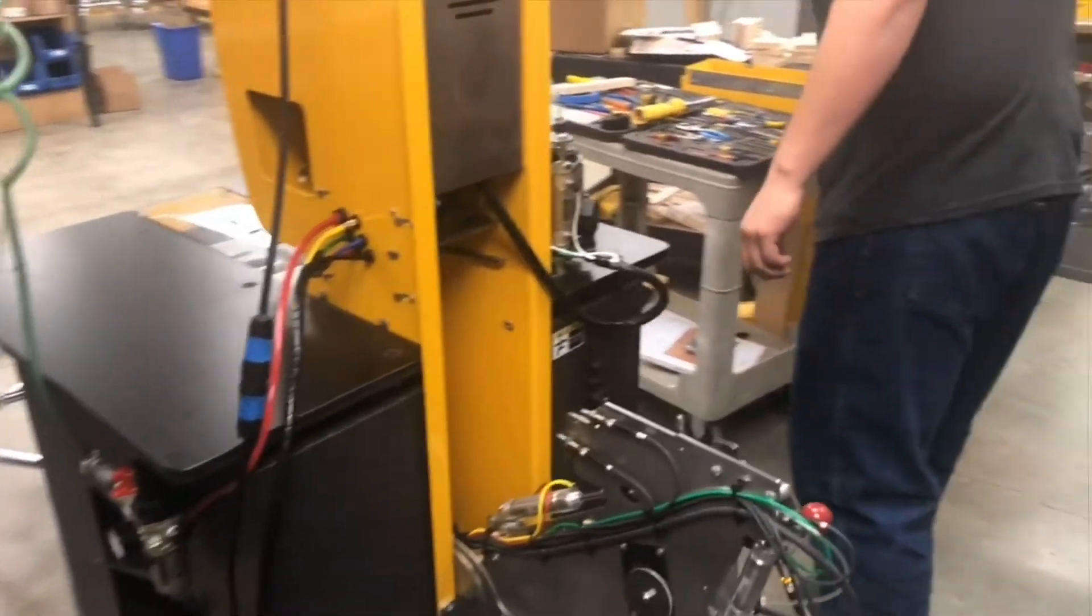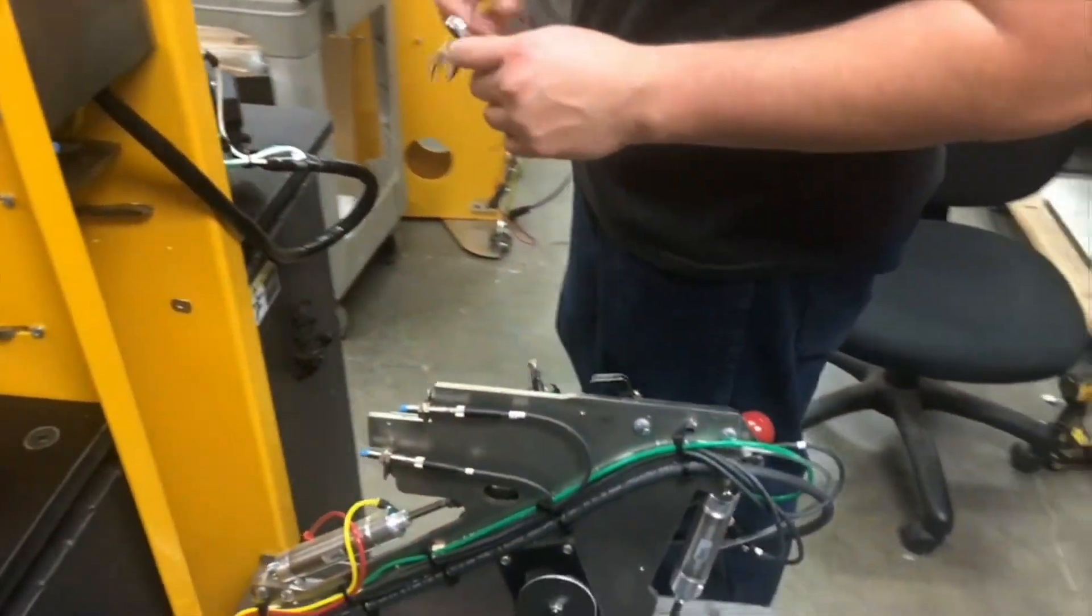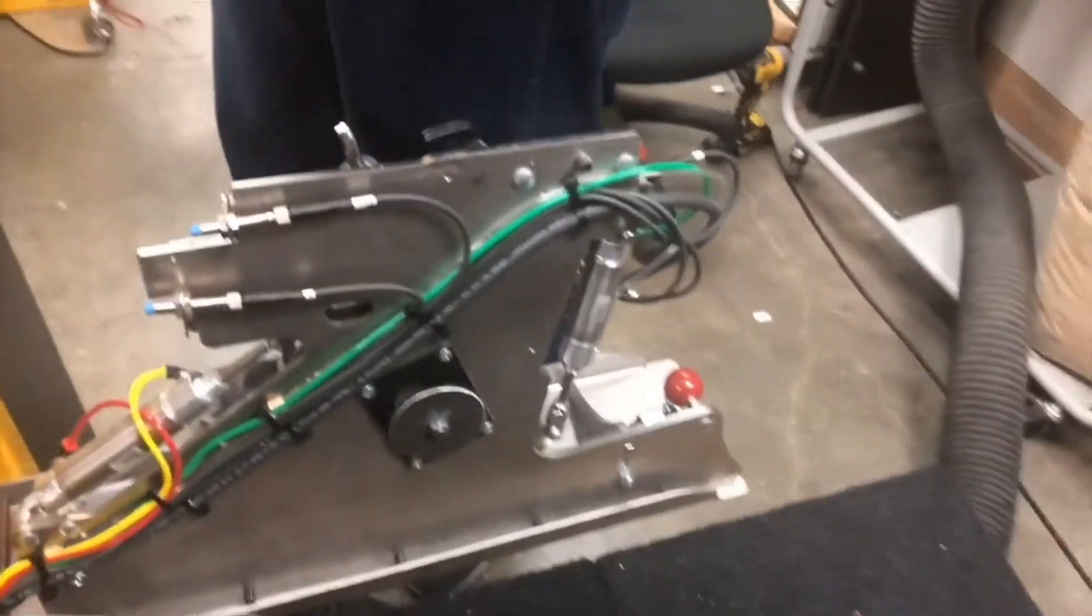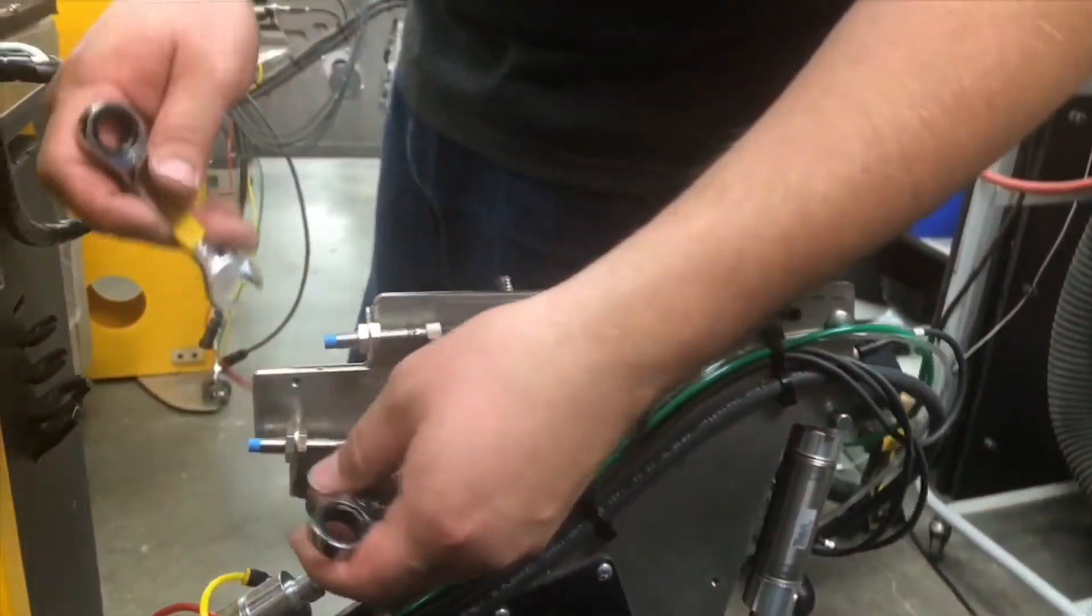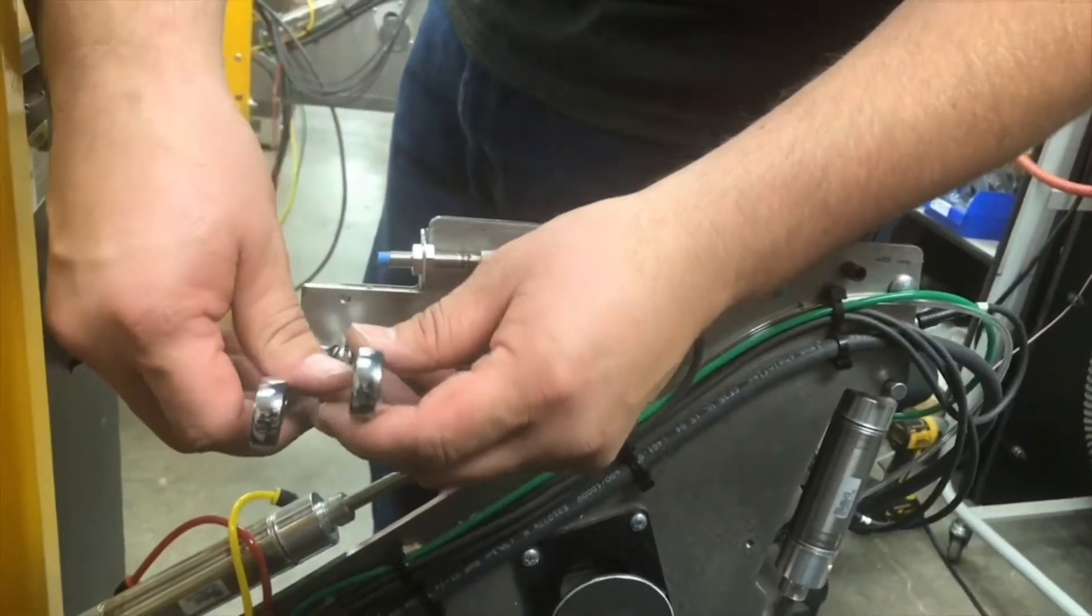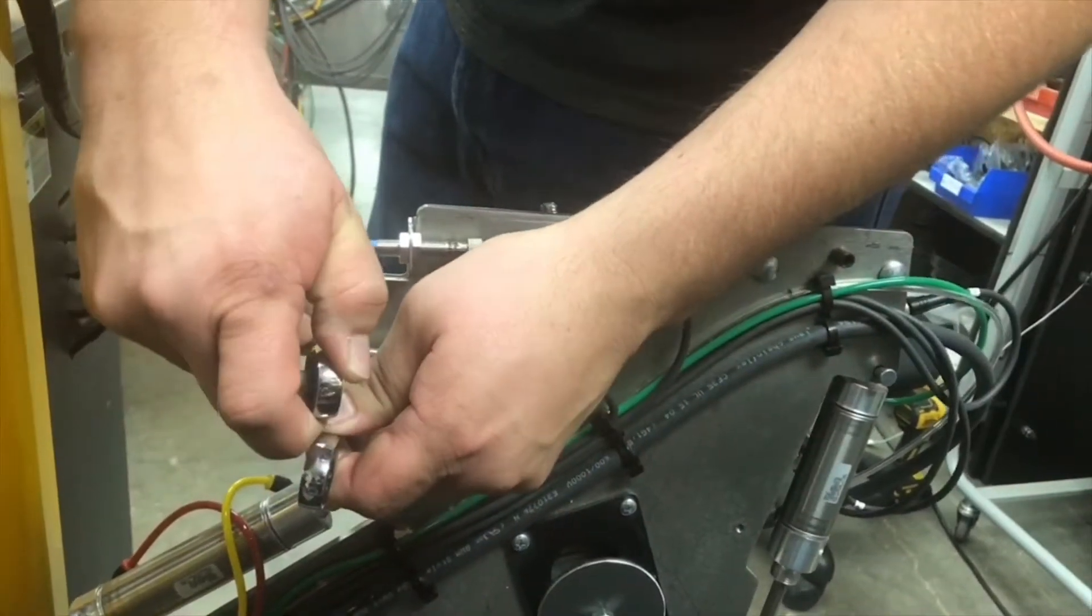With two 13mm wrenches, loosen sensor number 8 and visually adjust the spacing from the carriage plate to achieve the 1/16th of an inch gap.